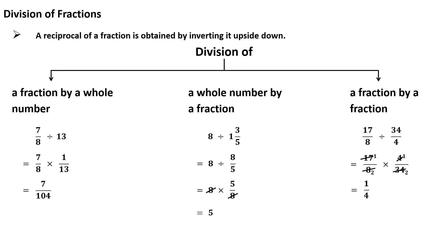The next one is division of a whole number by a fraction. While dividing a whole number by a fraction, we multiply the whole number with the reciprocal of the fraction. For example, 8 divided by 1 integer 3 upon 5 equals 8 divided by 8 upon 5, which equals 8 multiplied by the reciprocal 5 upon 8. The 8s cancel, and the answer is 5.